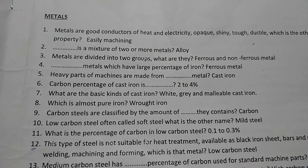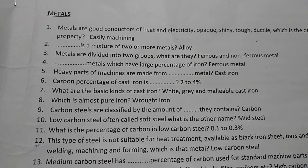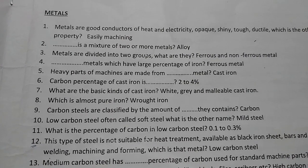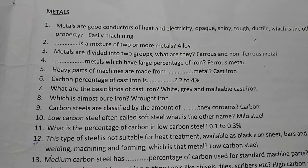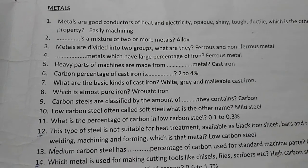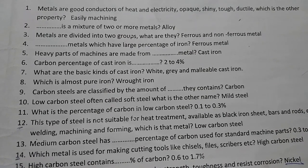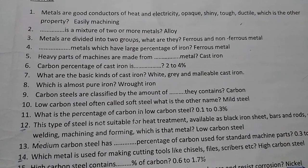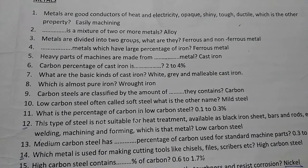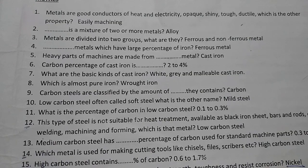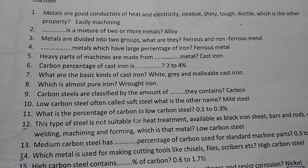Answer: cast iron. Heavy parts of machines are made from cast iron. The carbon percentage of cast iron is 2 to 4 percent. The basic kinds of cast iron are white cast iron, gray cast iron, and malleable cast iron.